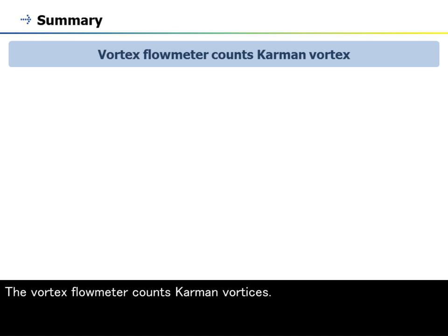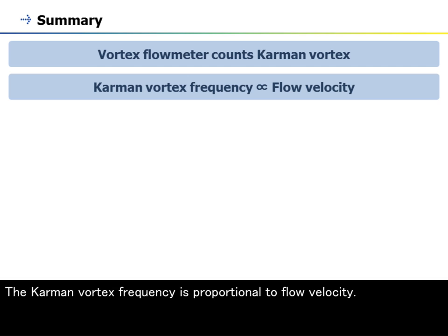Let us now summarize what we have learned in this module. Summary: The vortex flow meter counts Karman vortices. The vortex frequency is proportional to flow velocity. The K-factor is the number of pulses per unit volume.